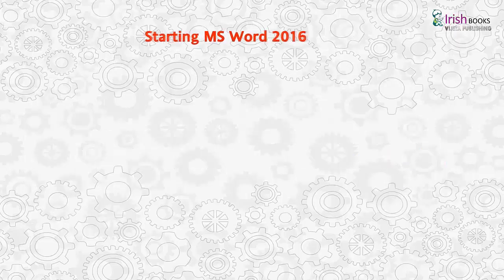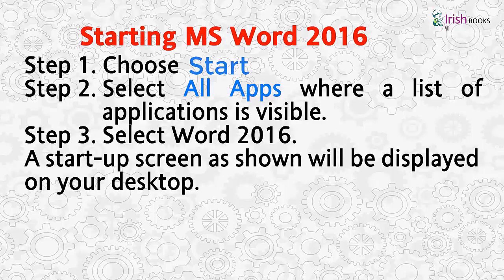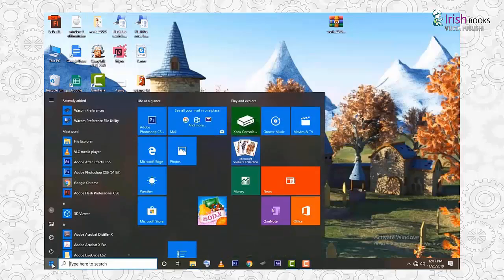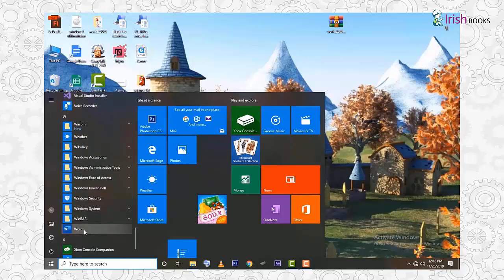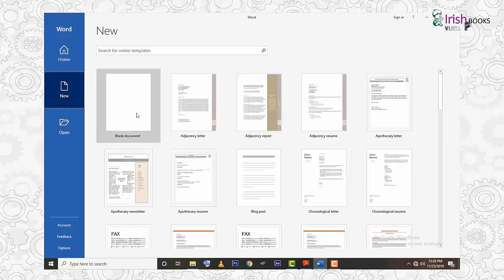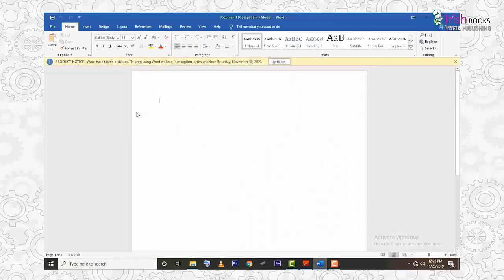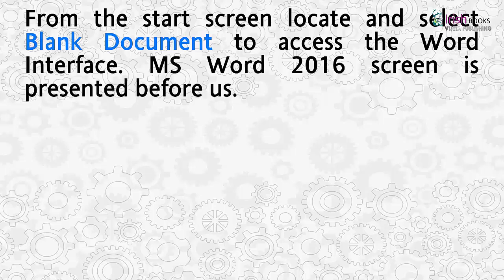Starting MS Word 2016: Step 1, choose Start. Step 2, select All Apps, where a list of applications is visible. Step 3, select Word 2016. A startup screen will be displayed on your desktop. From the start screen, locate and select Blank Document to access the Word interface. MS Word 2016 screen is presented before the start screen.